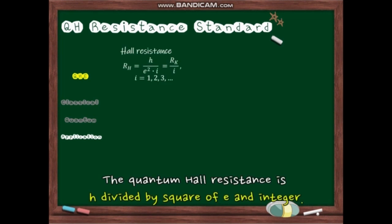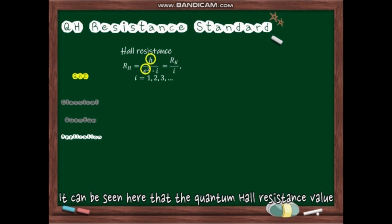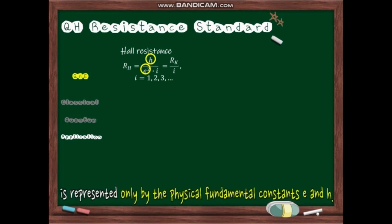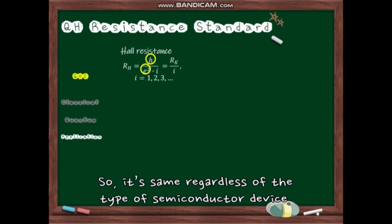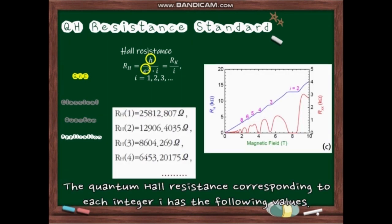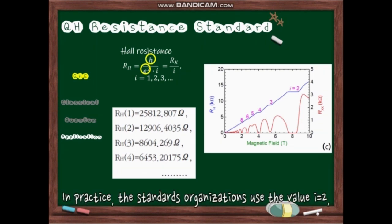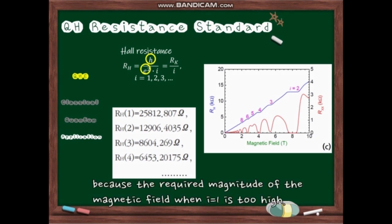The quantum Hall resistance is H divided by square of E times an integer. It can be seen here that the quantum Hall resistance value is represented only by the physical fundamental constants E and H, so it's same regardless of the type of semiconductor device. The quantum Hall resistance corresponding to each integer I has the following values. In practice, the standard organizations use the value I equals 2 because the required magnitude of the magnetic field when I is 1 is too high.